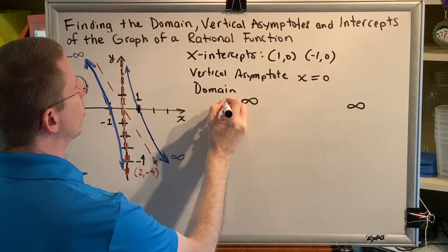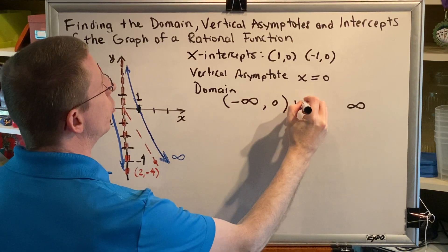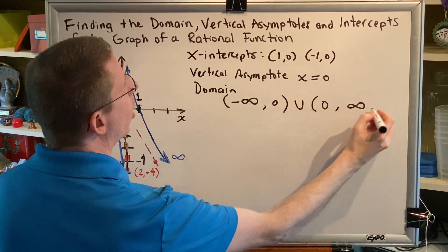So our domain will be constructed as follows. Parenthesis negative infinity comma zero, parenthesis union parenthesis zero comma infinity.